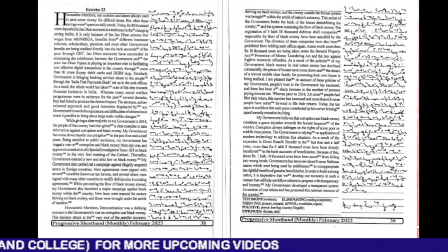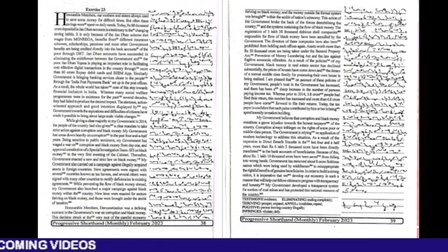The registration of 3,38,000 dubious shelf companies responsible for flow of black money have been annulled by the government. The directors of these companies have also been prohibited from holding such offices again.